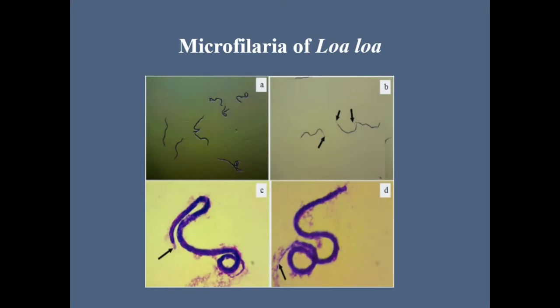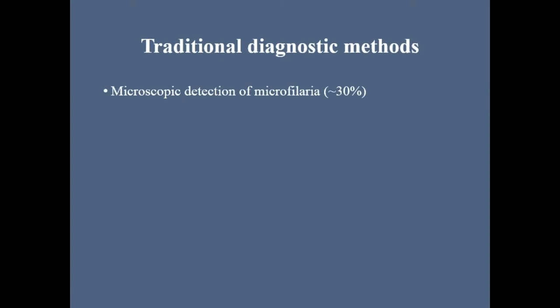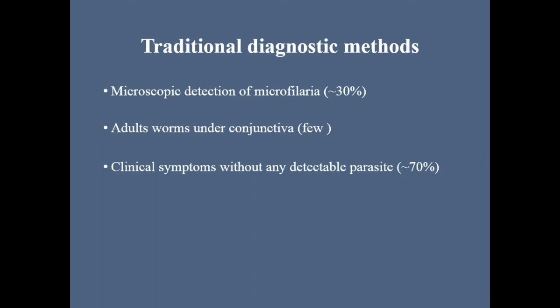Traditionally, its diagnosis is based on identification of microfilariae, which are present in about 30% of infected patients, or the passage of adult worm under the conjunctiva in a few cases. The majority of infected people are amicrofilaremic despite clinical symptoms suggesting infection by Loa Loa.